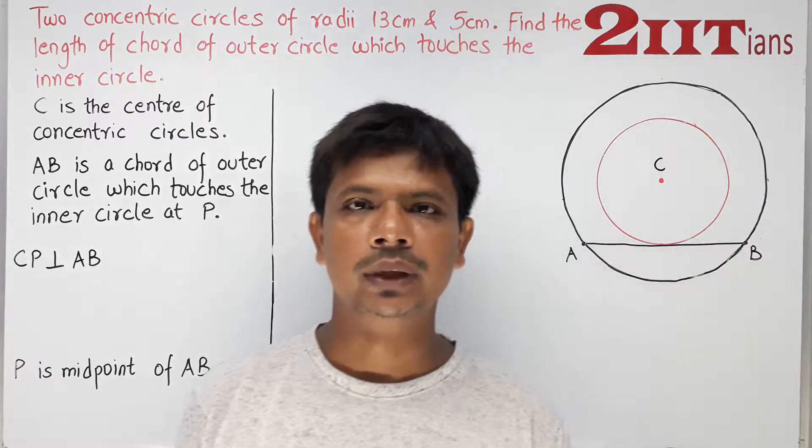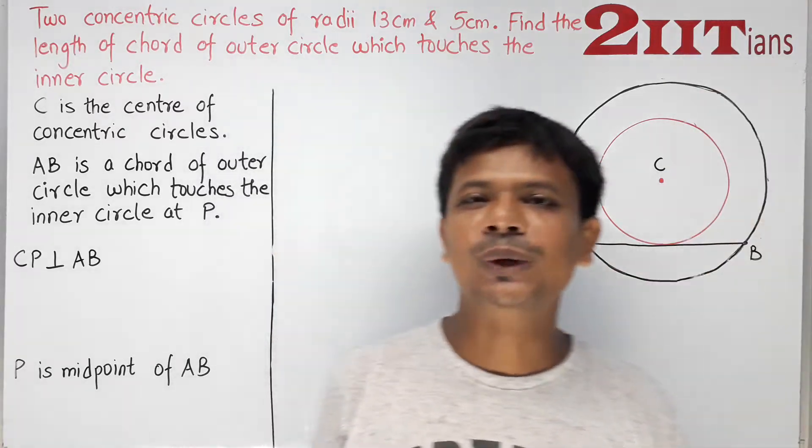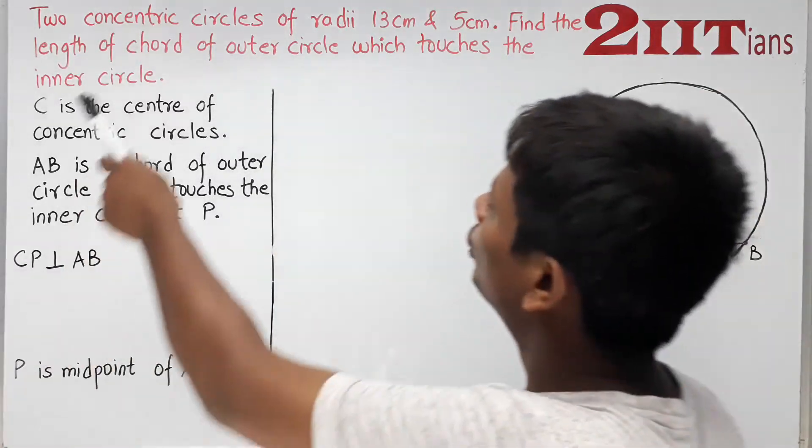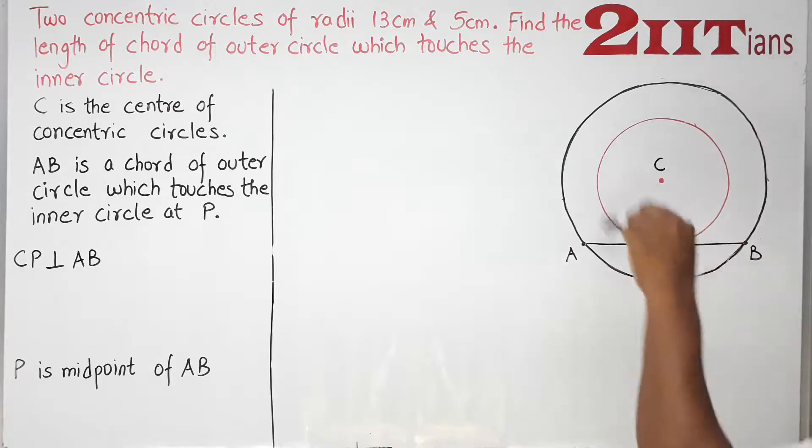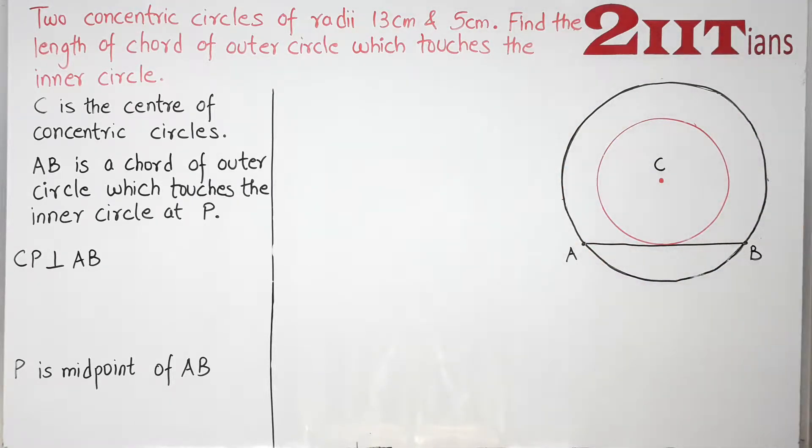Students subscribe and press the bell icon to never miss a video from 2IITians. Two concentric circles of radius 13 cm and 5 cm.